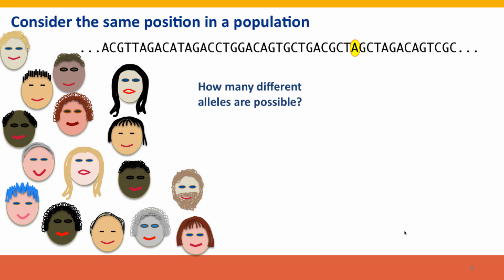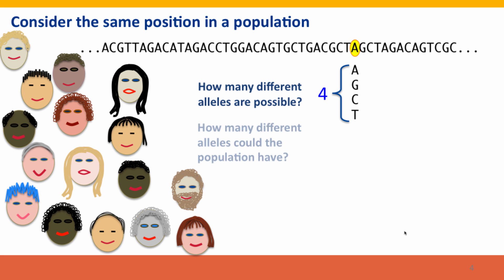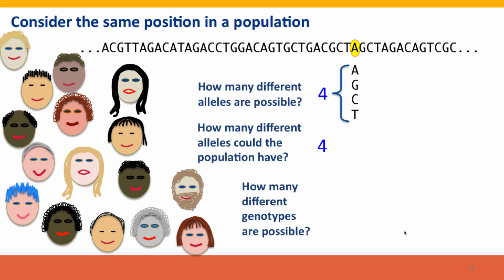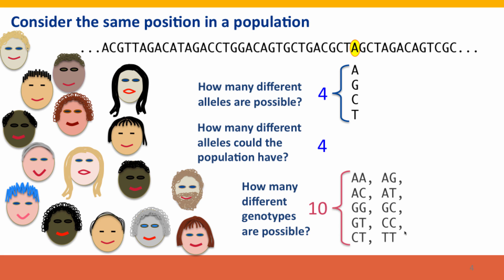Now let's branch out and think about the same position, but this time we're thinking about a population of people. How many different alleles are possible? Again, there's only four bases, so there's only four alleles possible. But while a single person could only have two, the population could certainly have all four alleles. How many different genotypes would then be possible in the population? With four alleles, we can make a lot of combinations — in fact, there are 10 different genotypes possible just from the four different bases in a population.